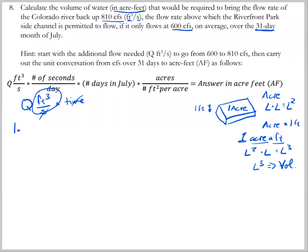So step one, we need to know how much water do we have to make up. We're at 600 CFS and we need to get up to 810 CFS. 810 CFS minus 600 is equal to 210 CFS. In the problem on the quiz for this week, you'll probably have some different numbers. So now we have, this is what we have to make up. That's our Q.